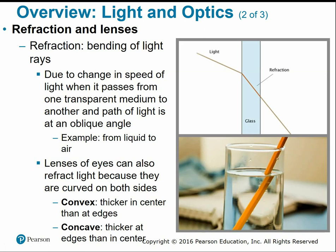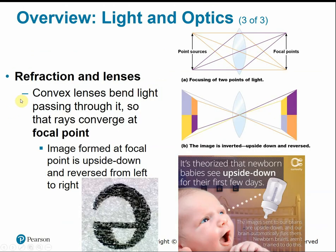Lenses are curved on both sides. Convex means thicker in the center than at the edges; concave means thicker at the edges than in the center. When light passes through the cornea it refracts, and then when it passes through the lens it's refracted again. Our convex lenses help bend light to converge on a single focal point in the retina.